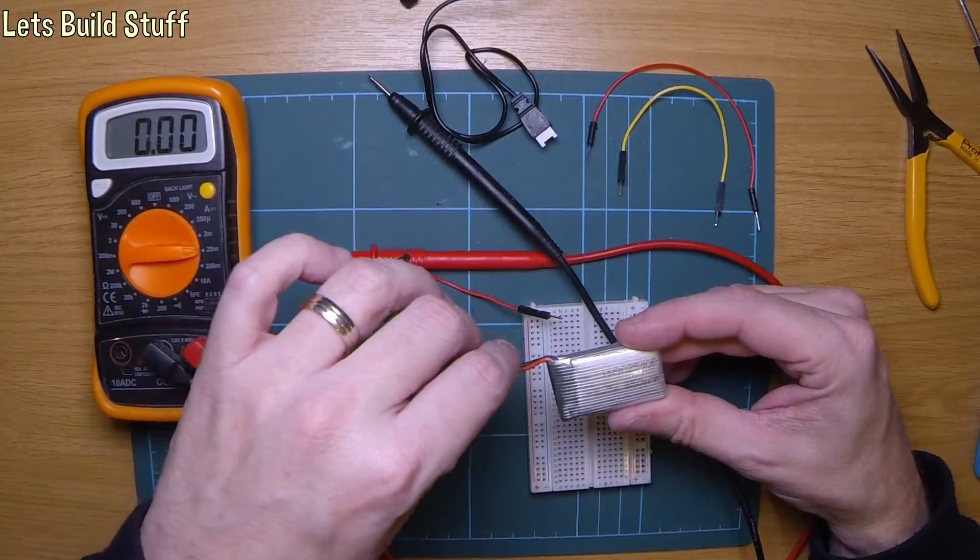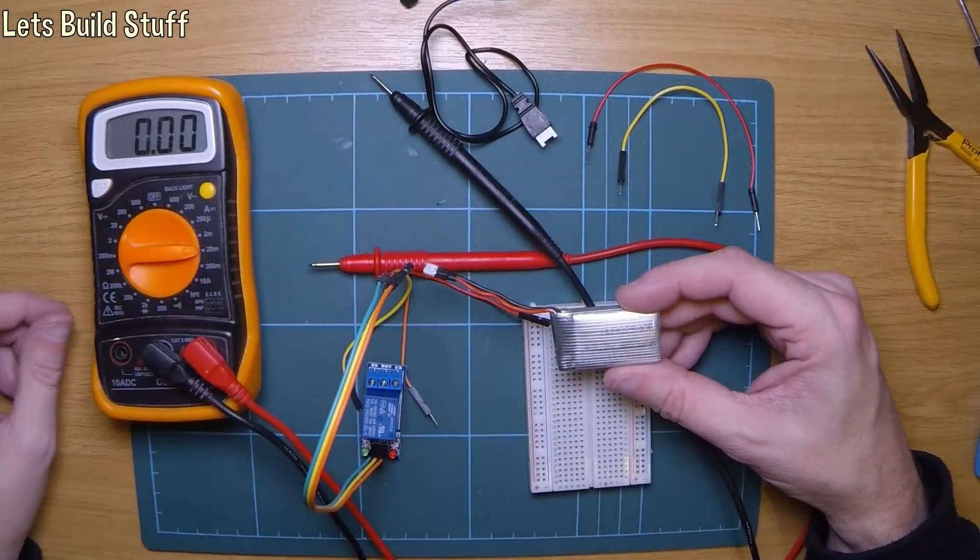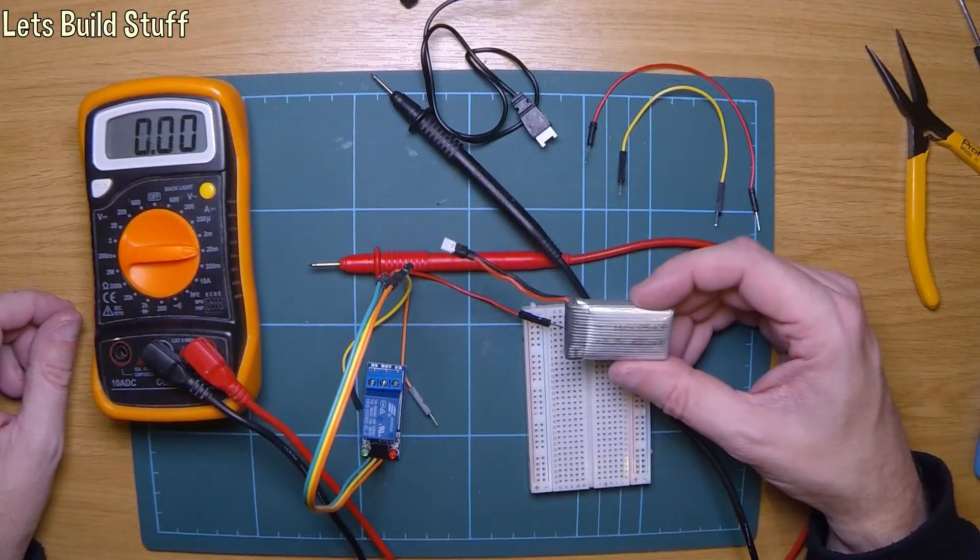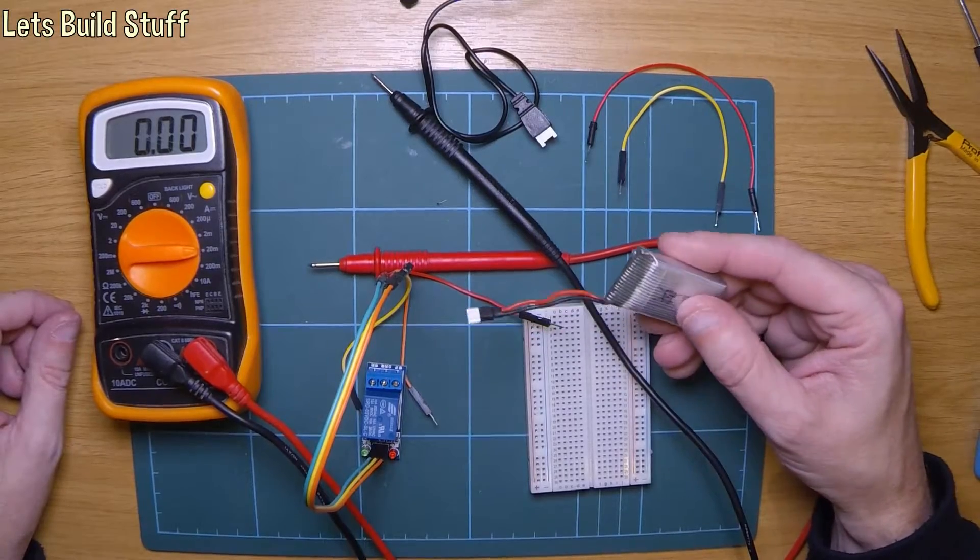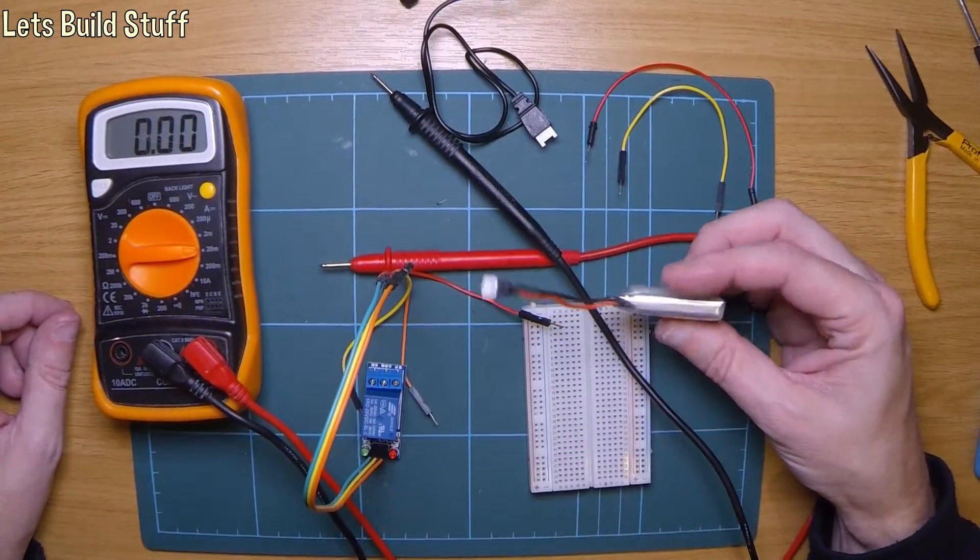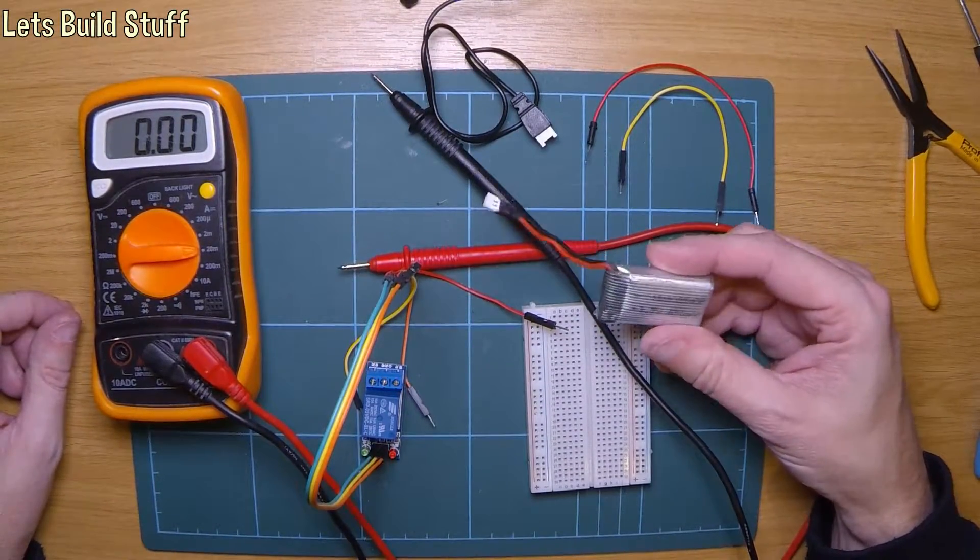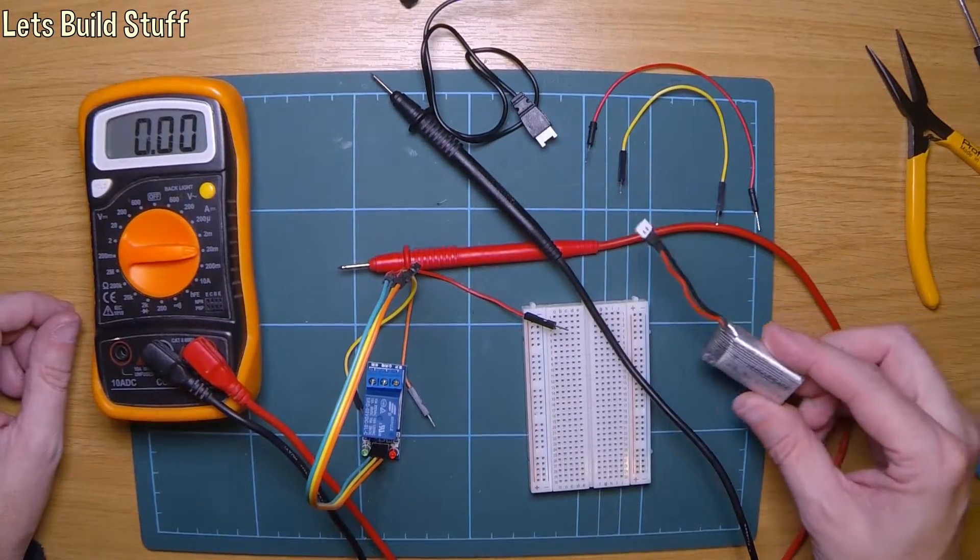This is a 650 milliamp-hour battery and it's just a 3.7 volt single cell LiPo that I got with a quadcopter. I've got a couple of them for the quadcopter so I've got a spare that I'm going to use for this.